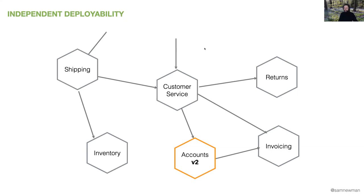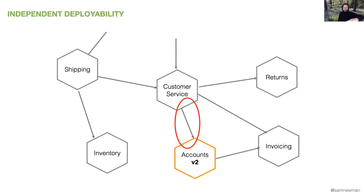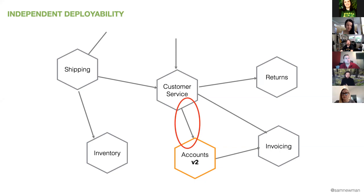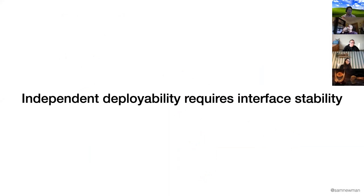For independent deployability to work, if I change the account service and redeploy a new version, I need to make sure that I still satisfy any upstream consumers. So the customer service making calls to my service — I need to make sure I haven't broken that interaction. If I want to be able to deploy things independently, I also need to make sure that the boundaries between these services are stable enough to allow for that. Independent deployability requires some degree of interface stability.